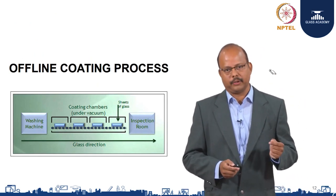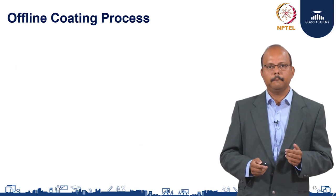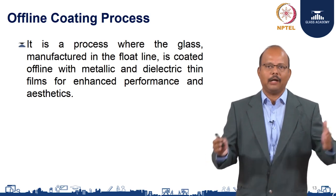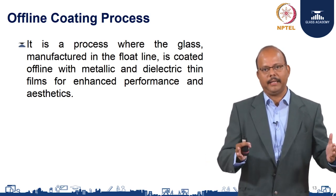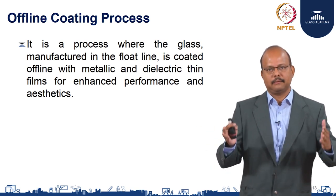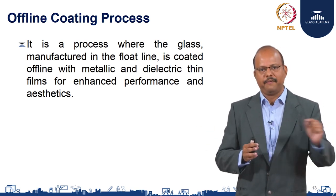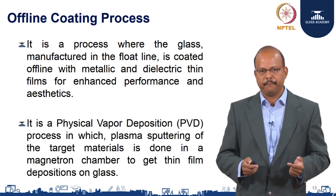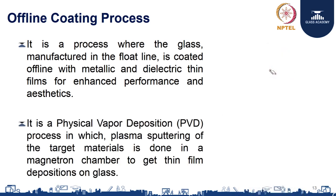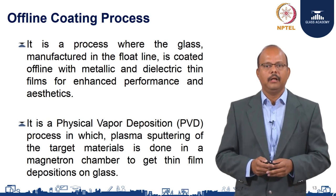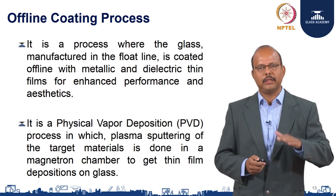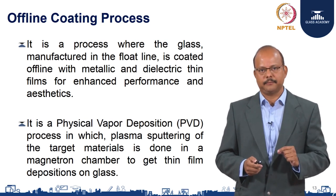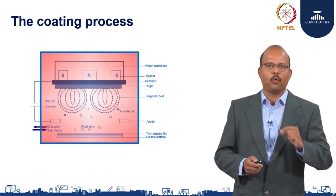Now let us understand the offline coating process in detail. The offline coating process happens outside the float glass line, where glass from the float line is coated with thin films — metallic and dielectric thin films — to achieve enhanced performance and aesthetics. It is generally a PVD process in which plasma sputtering of target materials is done in a magnetron chamber to get thin film deposition on the glass. Several thin film layers are deposited on the glass to achieve this enhanced performance and aesthetics.